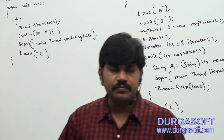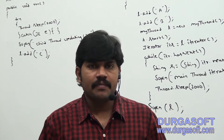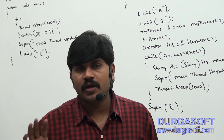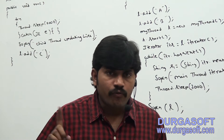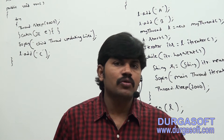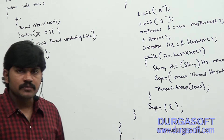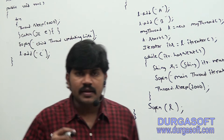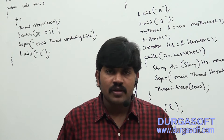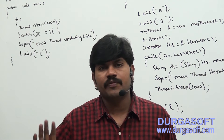Now the second program. In this program, what is my target? In the case of CopyOnWriteArrayList, while one thread is iterating, the other thread is allowed to perform an update operation — no problem at all. We won't get any ConcurrentModificationException. If it is a CopyOnWriteArrayList, there is no chance of any ConcurrentModificationException.